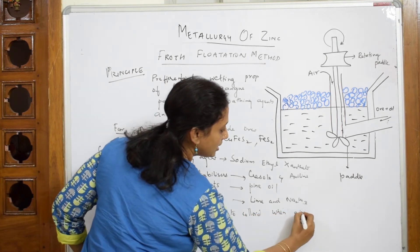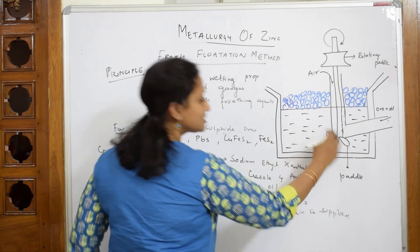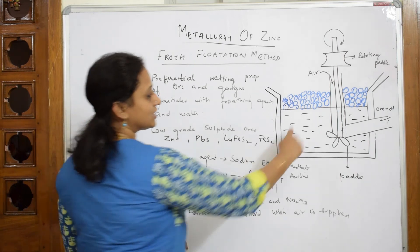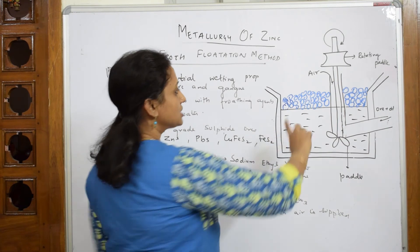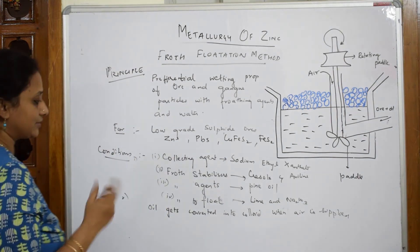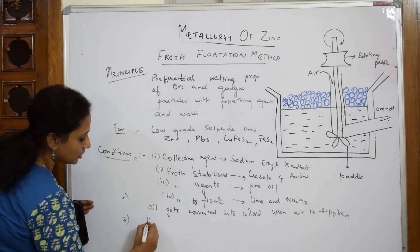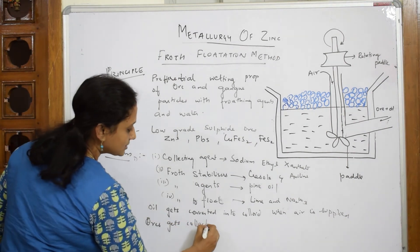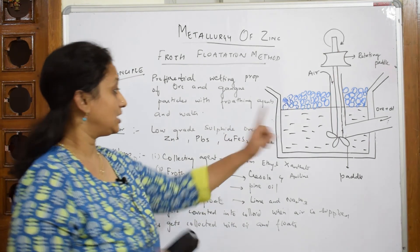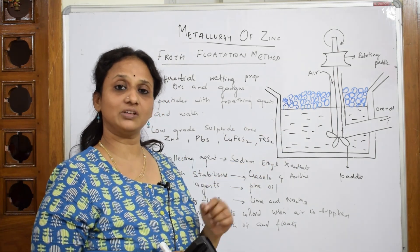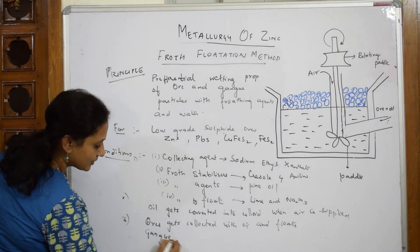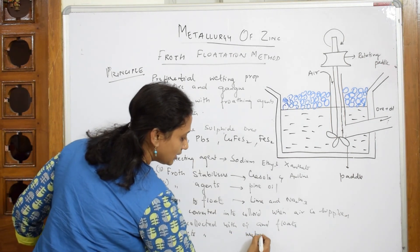Because of the froth stabilizer, frothing agent, floating agents, and collecting agents, the froth starts collecting and gets collected on the surface. The bubbles formed contain the ore — the sulfide ore we added. In the third step, the ore gets collected with oil and floats to the top. The gangue, which is the impurity, gets wetted with water and sinks. So ore is above, gangue is at the bottom — that is the concept of preferential wetting.